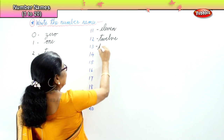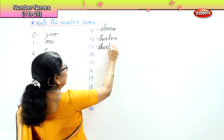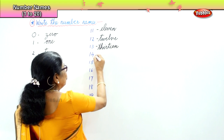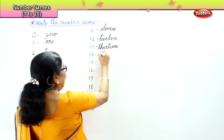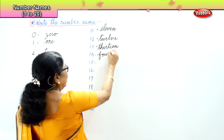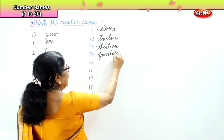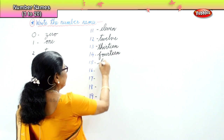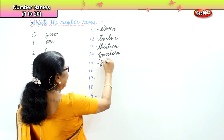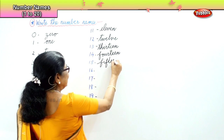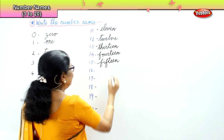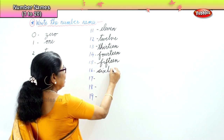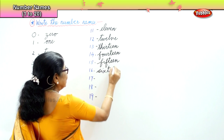13 — T-H-I-R-T-E-E-N. 13. 14 — F-O-U-R-T-E-E-N. 14. 15 — F-I-F-T-E-E-N. 15. 16 — S-I-X-T-E-E-N. 16.